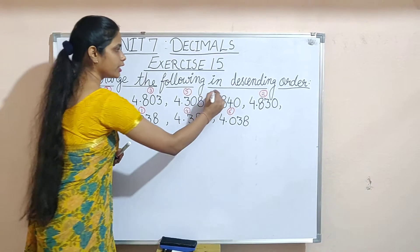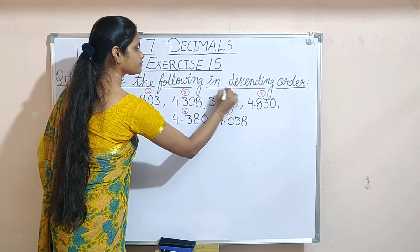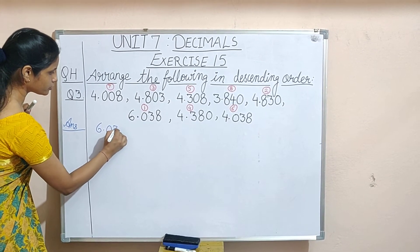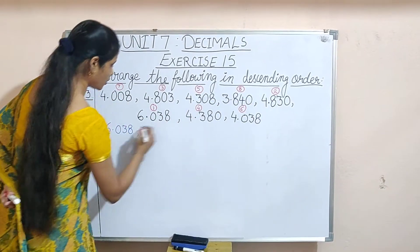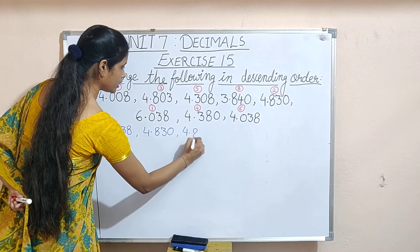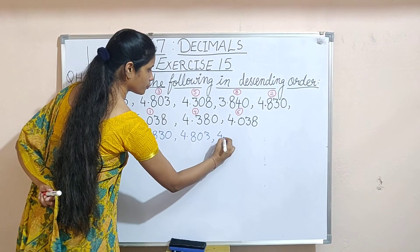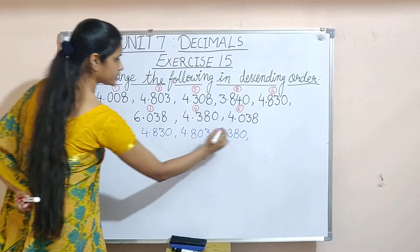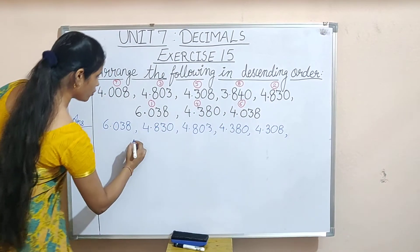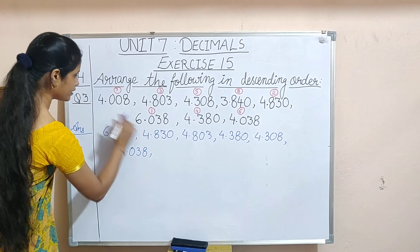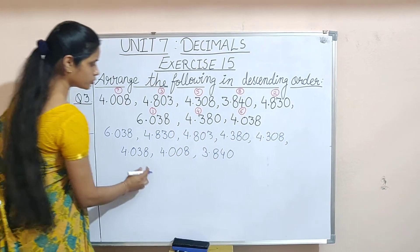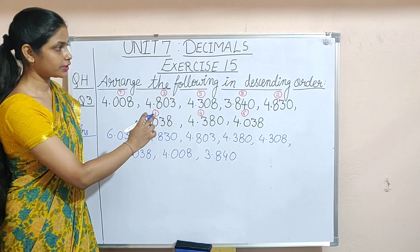Now we are left with only 3.840. It means it is the last number — the eighth number. So we can write the final answer like this: 6.038, 4.830, 4.803, 4.380, 4.308, 4.038, 4.008, 3.840. That is how you arrange decimal numbers in descending order.